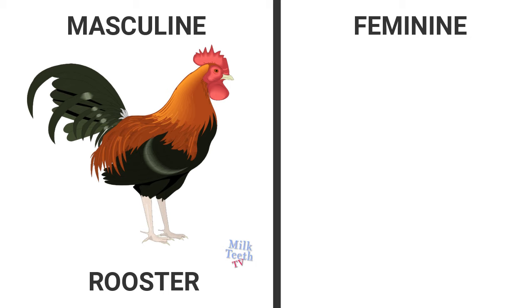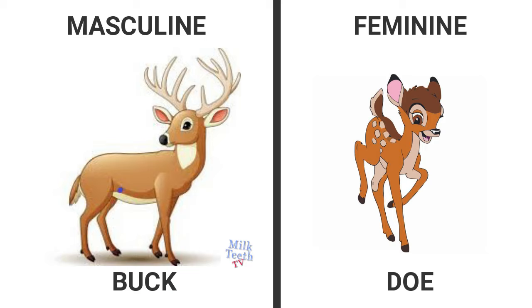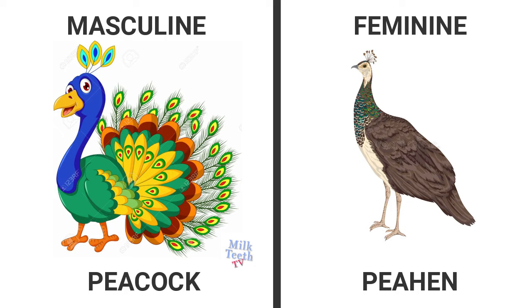Rooster — hen. Buck — doe; both are deer. Peacock — peahen.